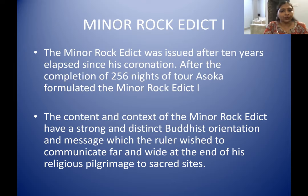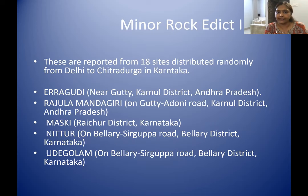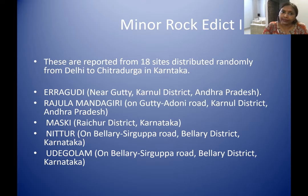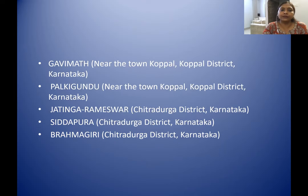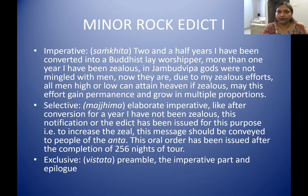Minor rock edict 1 is reported from 18 sites: Eragudi, Rajulamandagiri, Maski, Nittur, Udagala, Bahapur, Bairat, Gujarra, Rupanath, Pangurhadiya, Ratanpurva, Aharaura, Sasaram, Gavimath, Palkigundu, Jatinga-Rameshwar, Siddhapur, and Brahmagiri. Minor rock edict 1 can be divided into three categories: the shortest version, a medium version, and a long version. Surprisingly, the shortest version is the most important inscription because it carries only the imperative part — whatever is most essential.